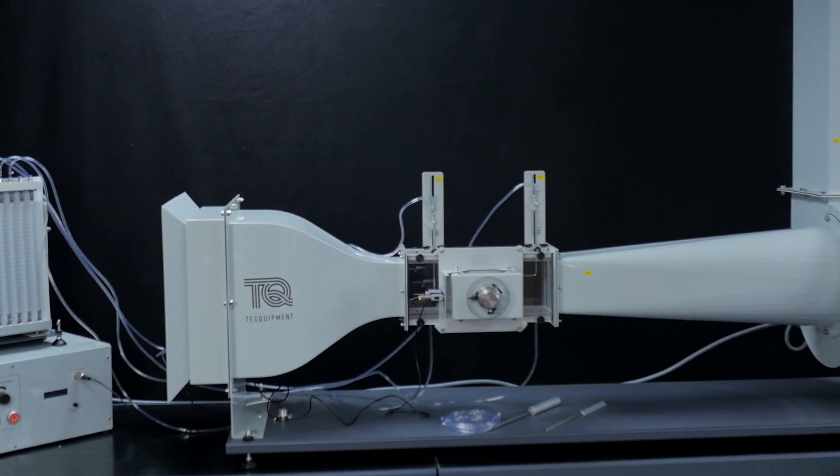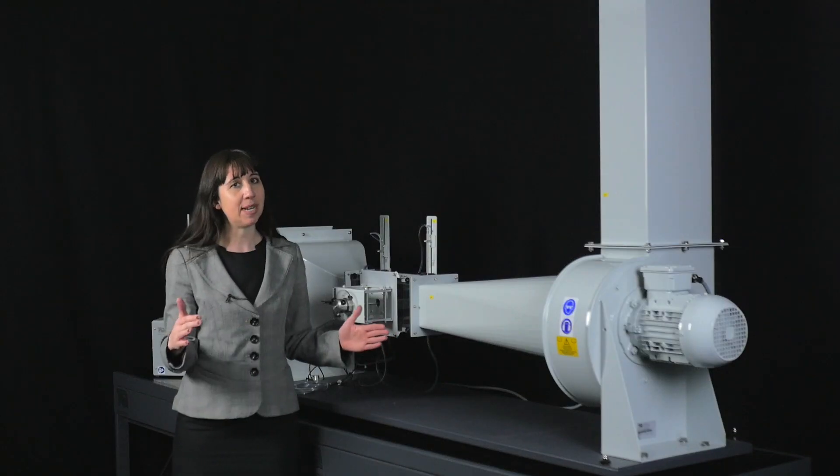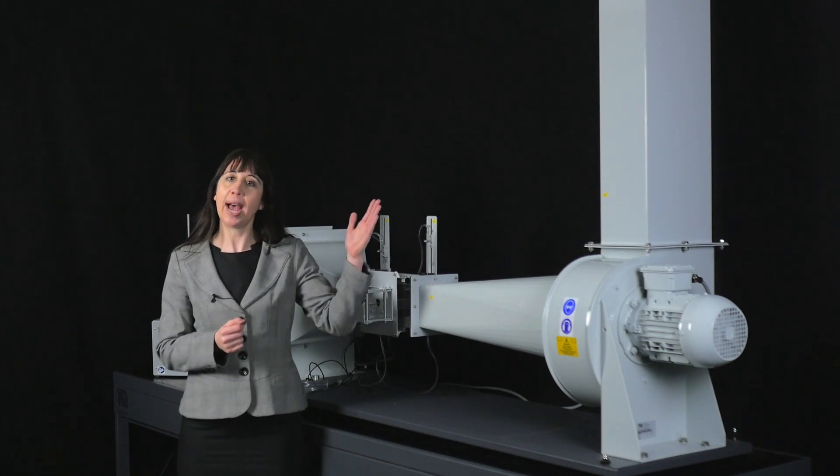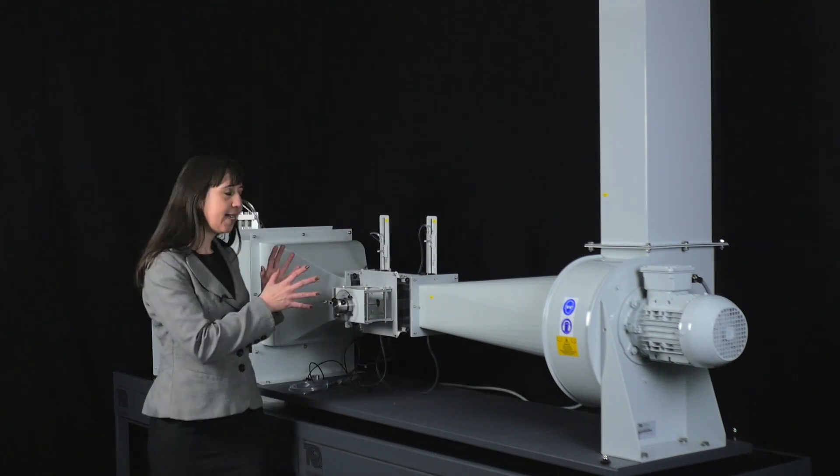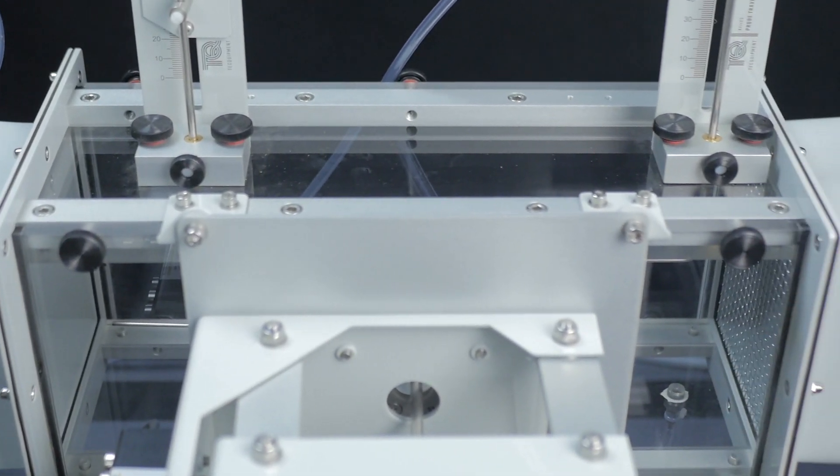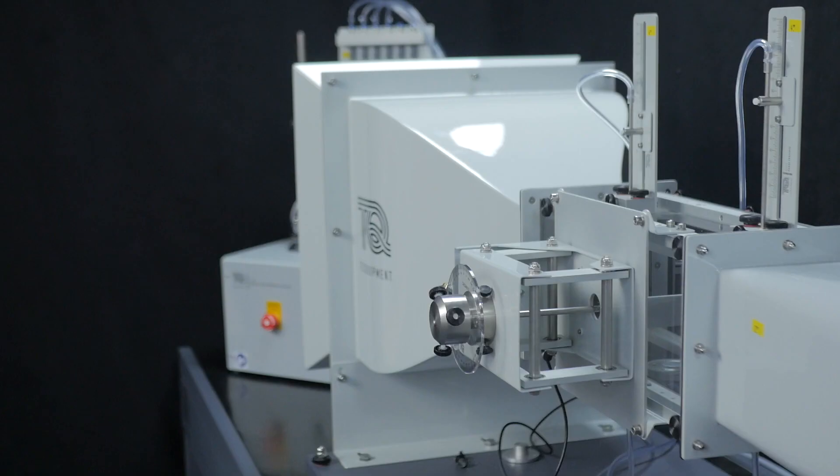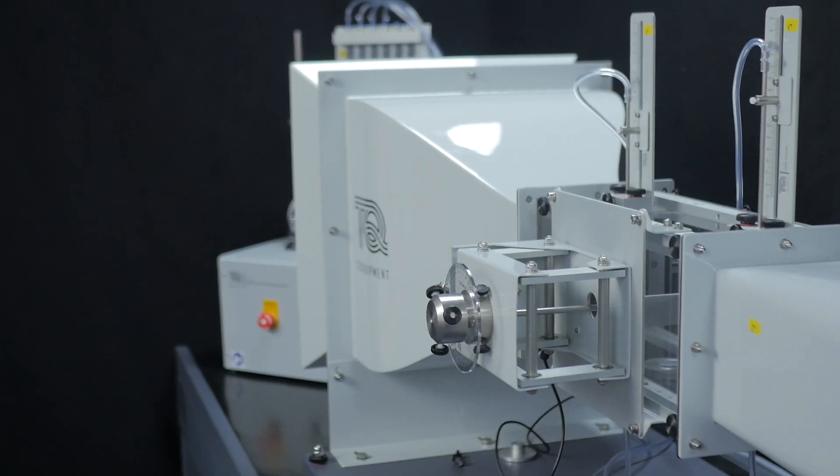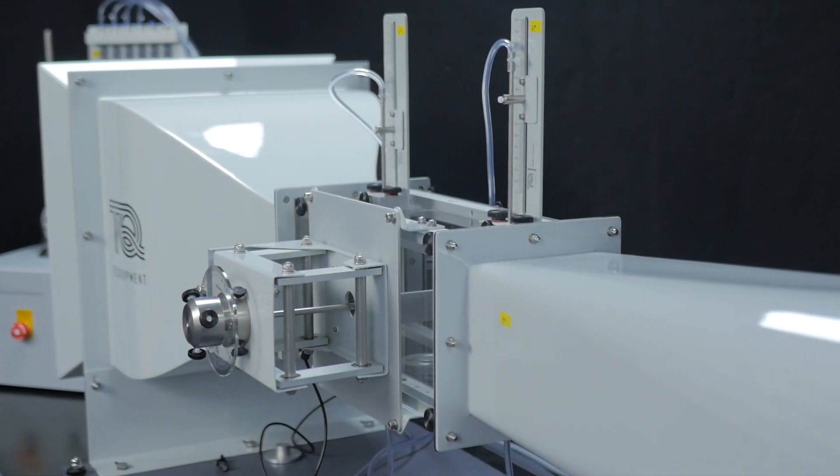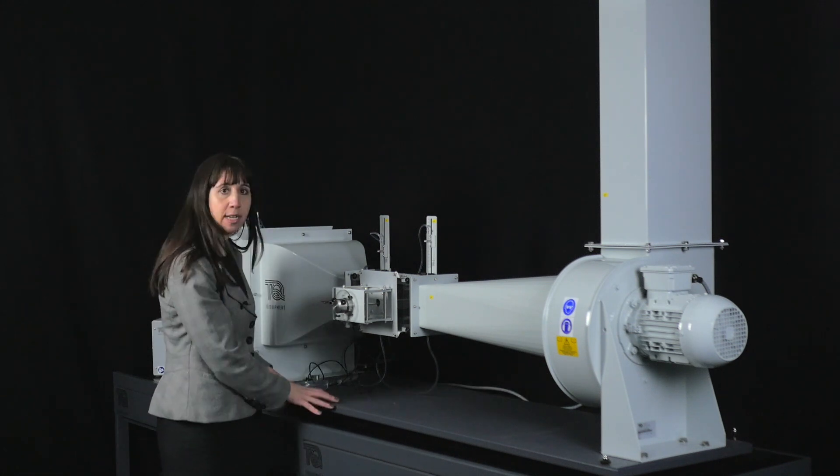The main wind tunnel is 1850 millimeters long, 560 millimeters wide, and taking into account the exhaust duct it's 1040 millimeters high. The working section itself is 125 millimeters by 125 millimeters and is made from clear acrylic. You can see here holders that support the wind tunnel models on the side and the floor. All of these main wind tunnel elements are mounted on a steel frame.